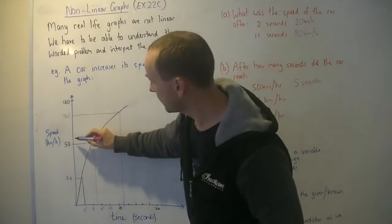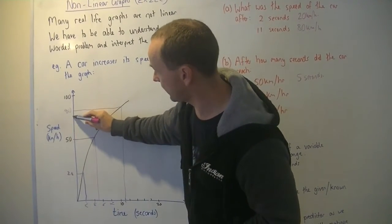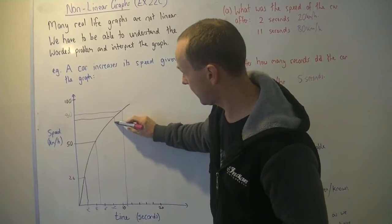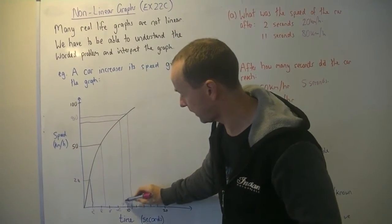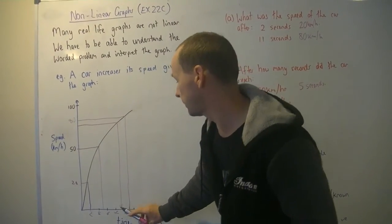75 kilometres an hour, so the next 50, there's 100, so 75 is pretty much halfway through, halfway between the two, we go down and let's just go with 9 seconds.